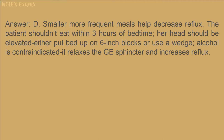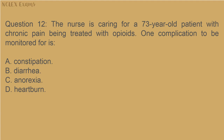Question 12: The nurse is caring for a 73-year-old patient with chronic pain being treated with opioids. One complication to be monitored for is: A) constipation; B) diarrhea; C) anorexia; D) heartburn.